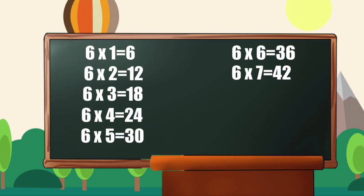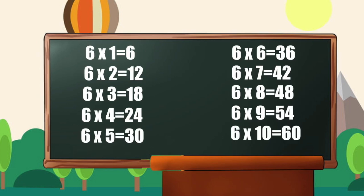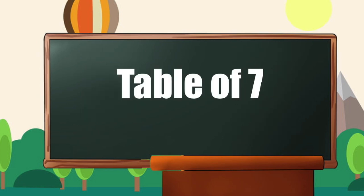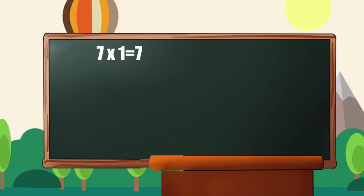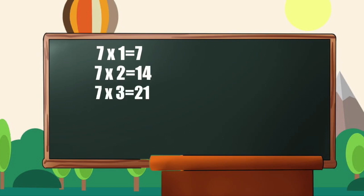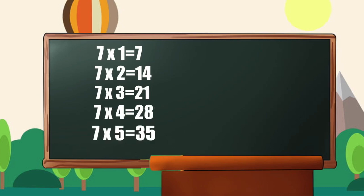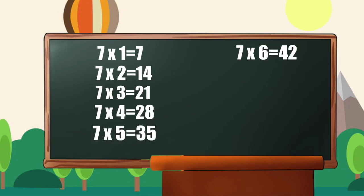6 7s are 42, 6 8s are 48, 6 9s are 54, 6 10s are 60. Table of 7: 7 1s are 7, 7 2s are 14, 7 3s are 21, 7 4s are 28, 7 5s are 35.